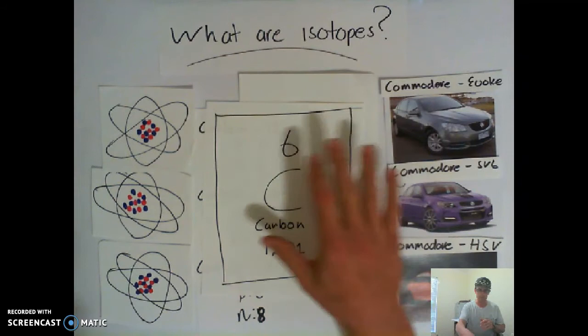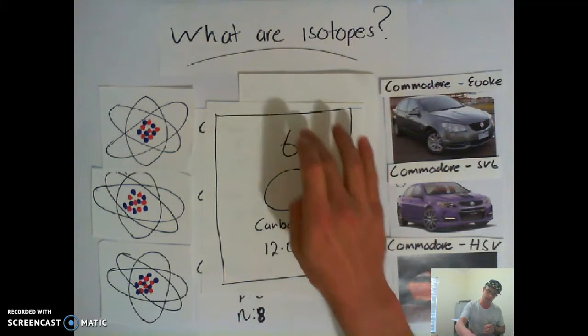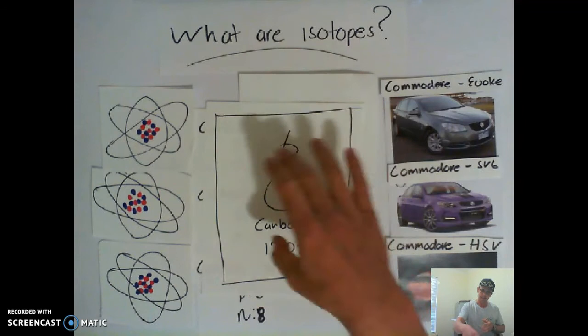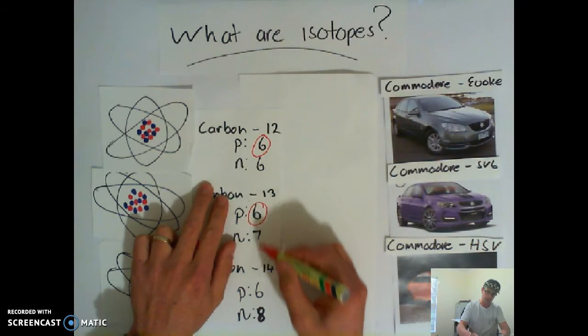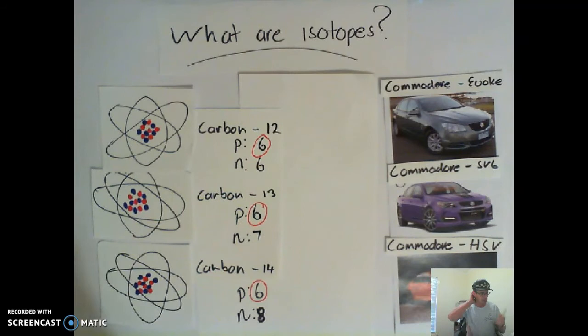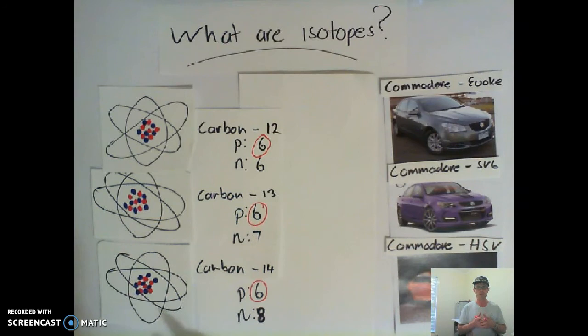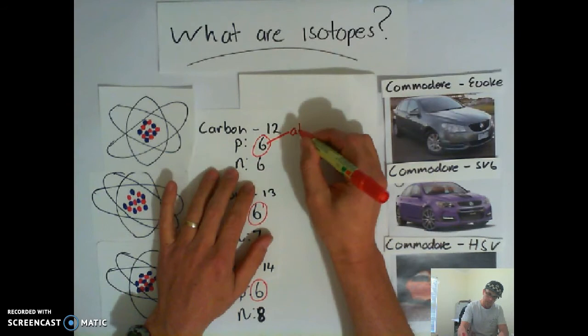So to summarize, it doesn't really matter how many neutrons are in each one of these atoms — they're still a carbon atom. And that's because carbon is defined by how many protons are in its nucleus. So if we were to look up carbon on the periodic table, we'd find the symbol, and this big six here says that is its atomic number. Six relates to how many protons are in the atom. So because we've all got six protons, they are a carbon atom. So an isotope is a different version of an atom. All of these are just different versions of the carbon atom.